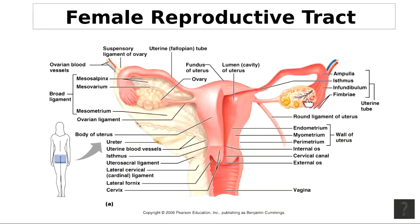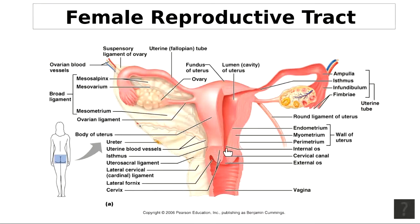The fundus — F-U-N-D-U-S — is the top dome-shaped portion of the uterus. The main central portion is called the body, and the lower end is the cervix — C-E-R-V-I-X. Inside is the uterine cavity where the fetus develops. A cervical canal passes through the cervix, with two openings: the internal os between the uterine cavity and cervical canal, and the external os where the cervix opens into the vagina. 'Os' means opening or mouth.